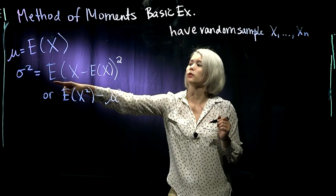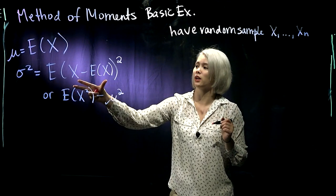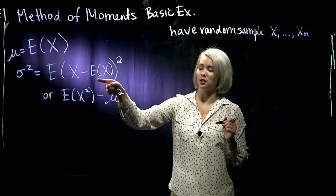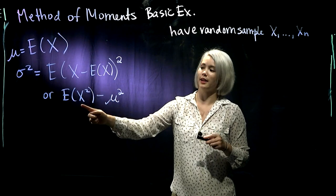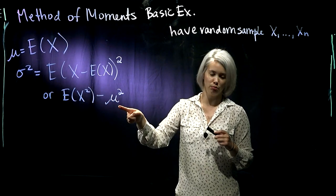So we can write that two ways. We could write it as the expectation of the square of X minus expectation of X, or we could write it as the expectation of X² minus μ².